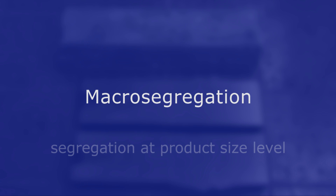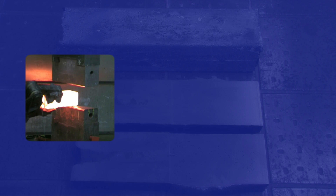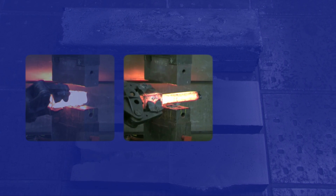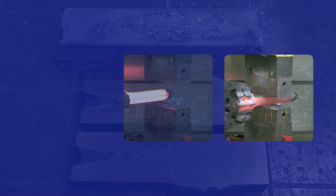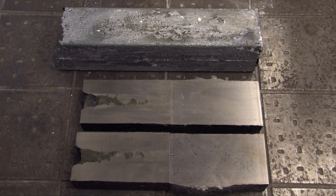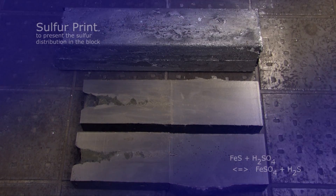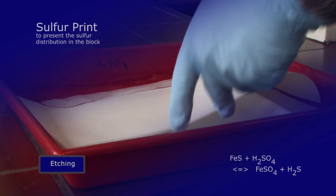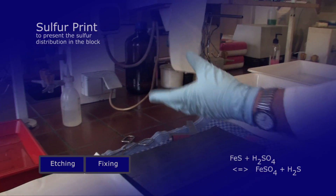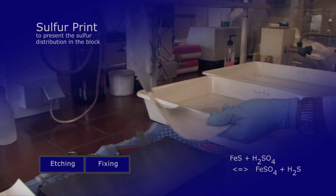The enrichment of elements in the semi-finished product at macroscopic level is called macrosegregation. For the presentation of macrosegregations, the as-cast block is forged at IBF to reduce the cavities. After forging, the block is cut in the middle for the detection of macrosegregations.